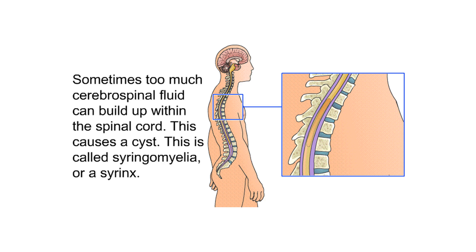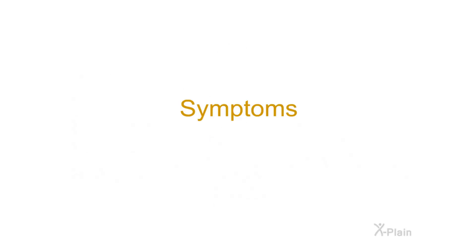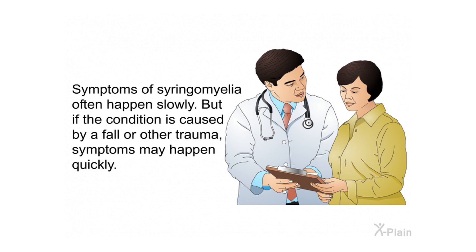Sometimes too much cerebrospinal fluid can build up within the spinal cord, causing a cyst. This is called syringomyelia, or the syrinx. Symptoms of syringomyelia often happen slowly, but if the condition is caused by a fall or other trauma, symptoms may happen quickly.